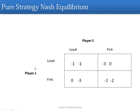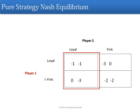What we need to do is find out the best strategy in a particular case. Let's say player 2 is playing loyal. Player 1 is having two options — player 1 can either go for fink or can go for loyal. We need to see which one will get him a higher payoff. For loyal there is minus 1 payoff and for fink there is 0 payoff. So obviously 0 is greater than minus 1, so fink is the best strategy. We will circle this value.